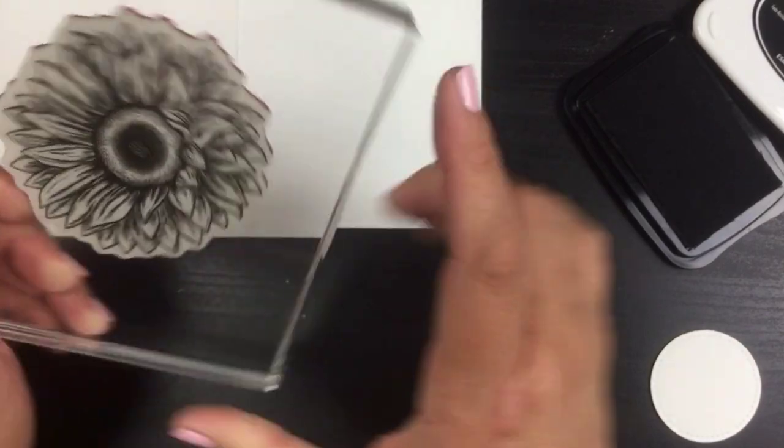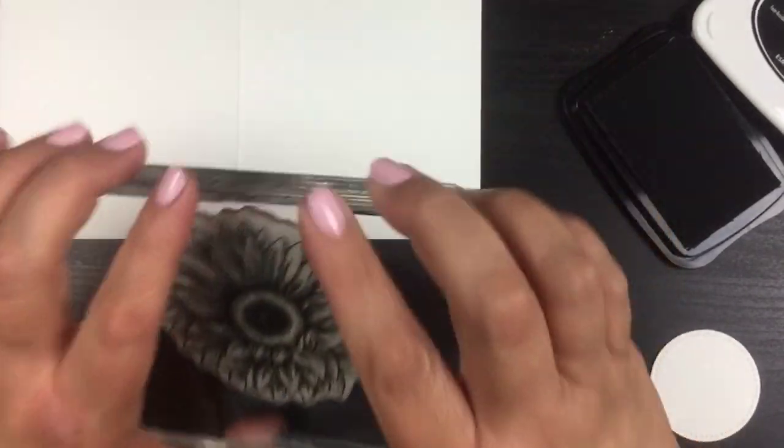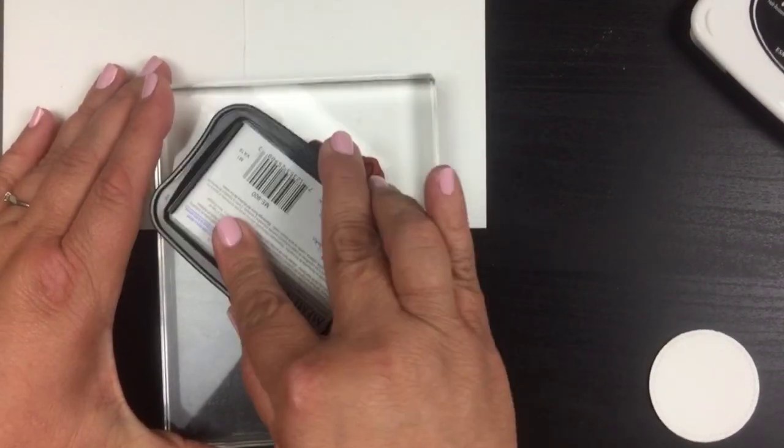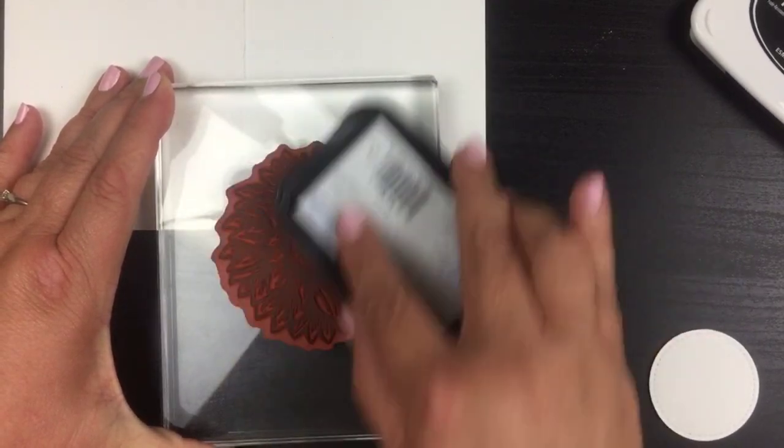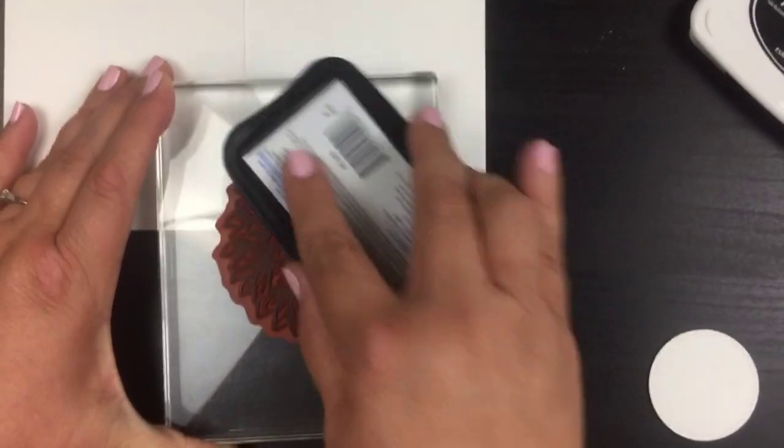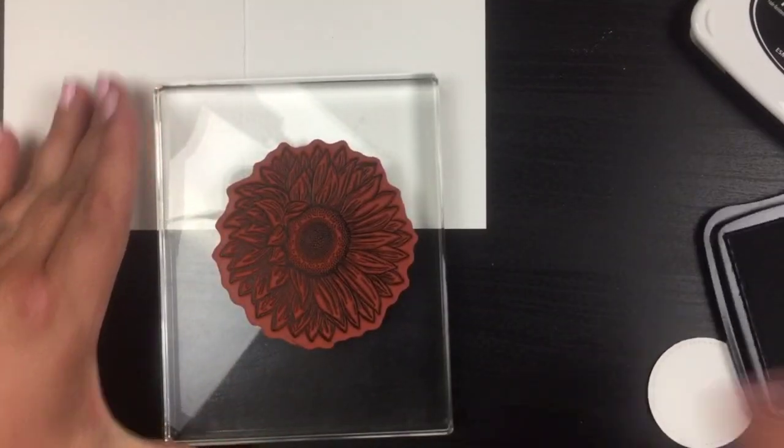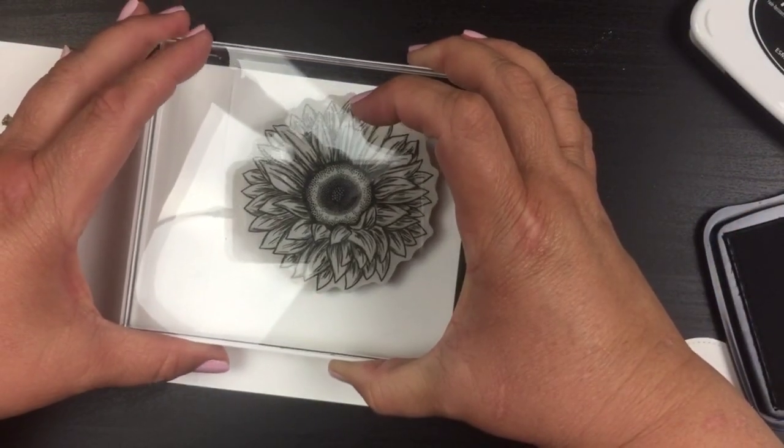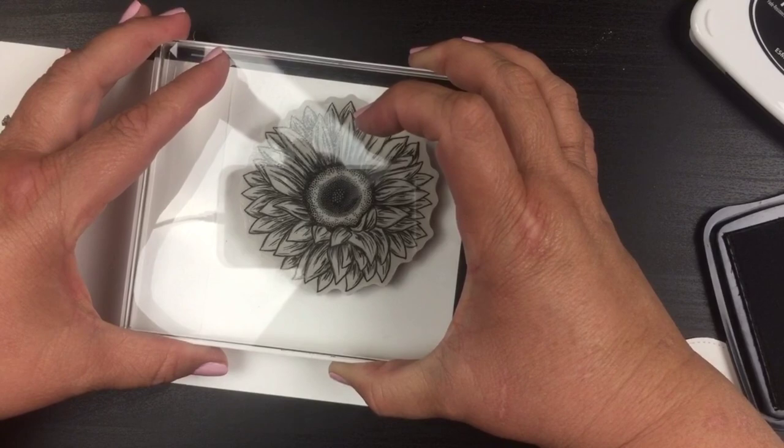All right, so we've got that. Now we're gonna take that big sunflower and we want to find the way that we want it. We're gonna just ink that all up, get it all good and inked up there. And then we're going to stick that right in the center. Look at how pretty that is.